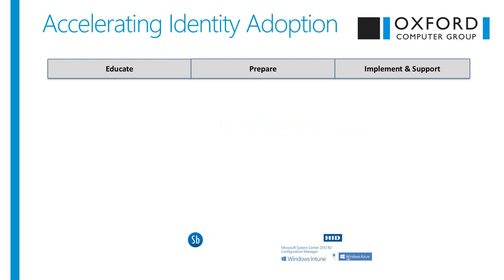During the course of the webinar, I'll briefly introduce Oxford Computer Group, then turn it over to James Cowling, our Chief Technology Officer. He'll guide you through some fresh thinking about identity management and what it means going into the future. Feel free to type your questions into the question box, and we'll answer them as we can.